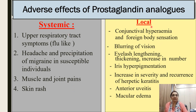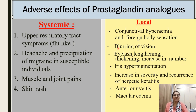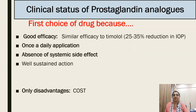Local adverse effects of prostaglandin analogs include conjunctival hyperemia and foreign body sensation, blurring of vision, thickening, lengthening and increase in number of eyelashes, iris hyperpigmentation, increased severity and recurrence of herpetic keratitis, anterior uveitis, and macular edema.